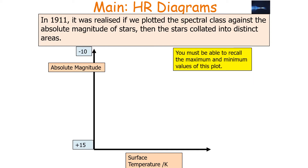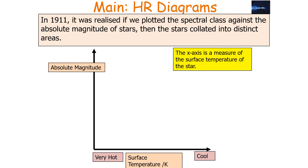You need to be able to recall the maximum and minimum values of this plot for a standard Hertzsprung-Russell diagram. A standard Hertzsprung-Russell diagram goes from plus 15 at the dimmest to minus 10 at the brightest. The x-axis is a measure of surface temperature, with very hot at the left-hand side and very cool at the right-hand side — 50,000 Kelvin at the left and 2,500 Kelvin at the right. You have to be able to recall these values for your examination.